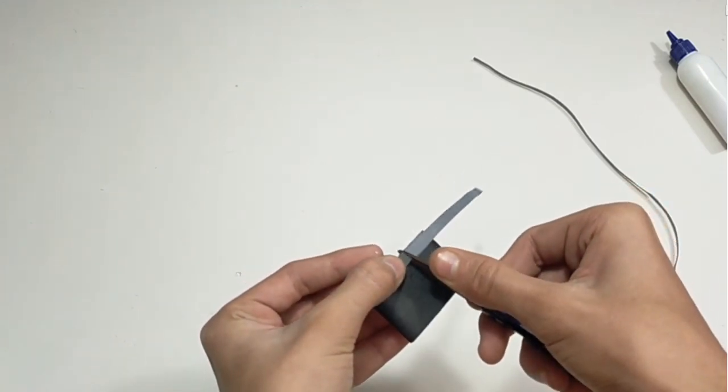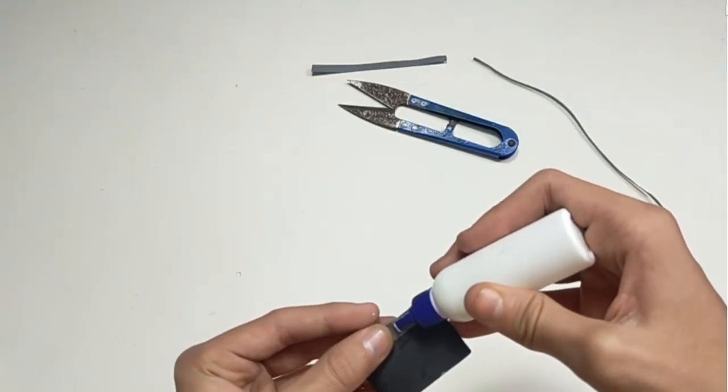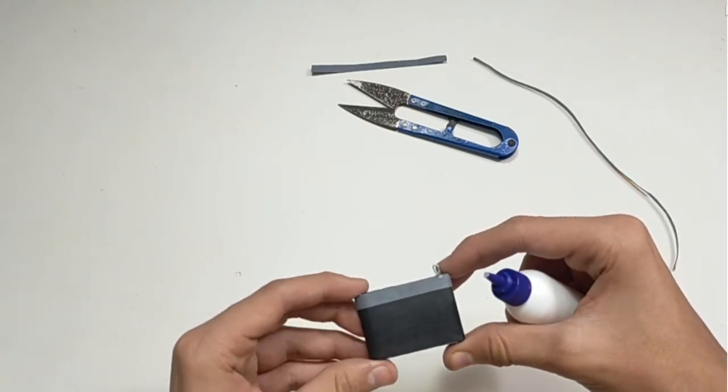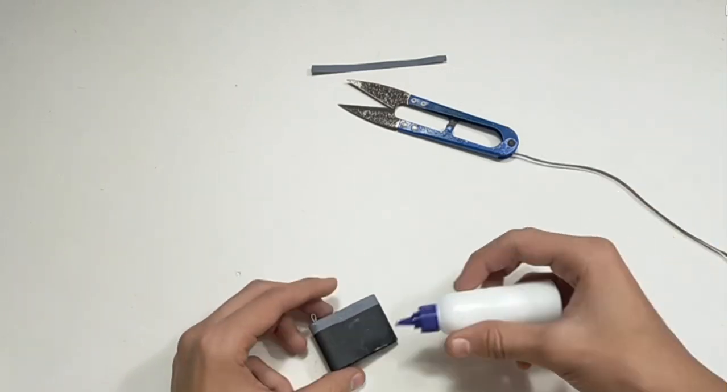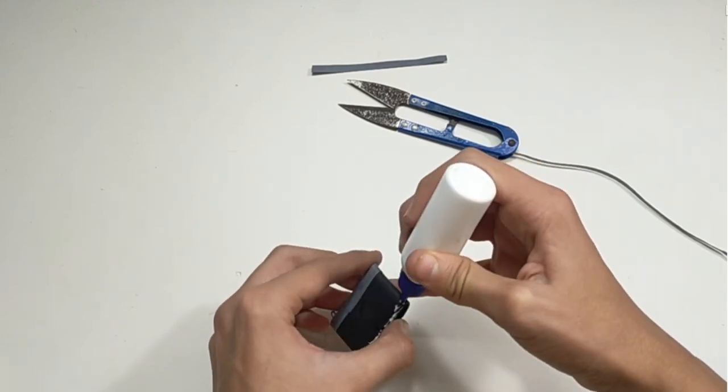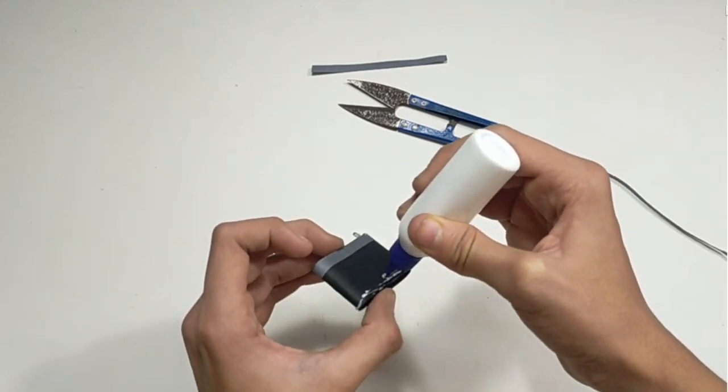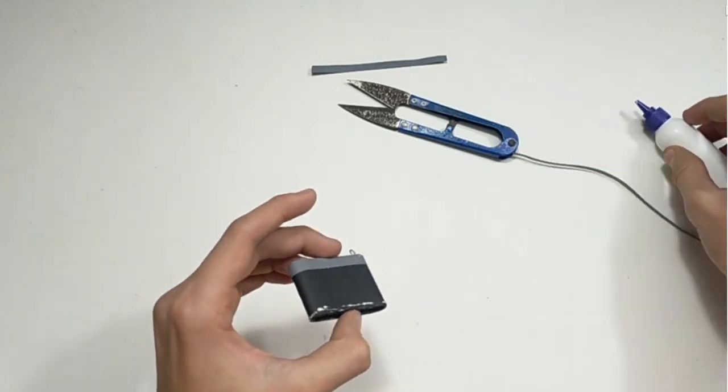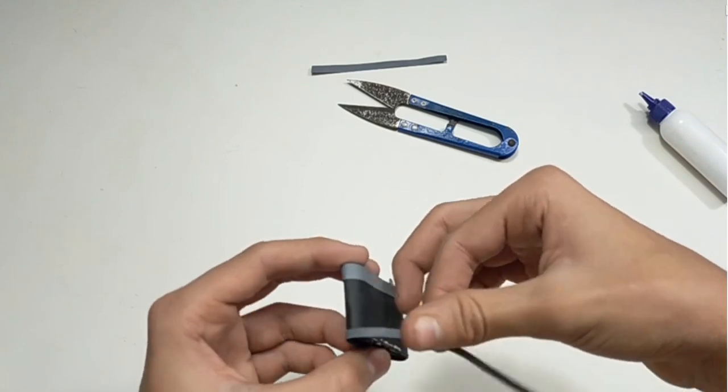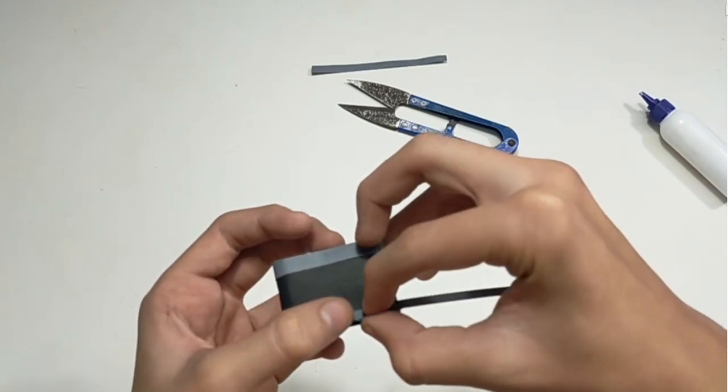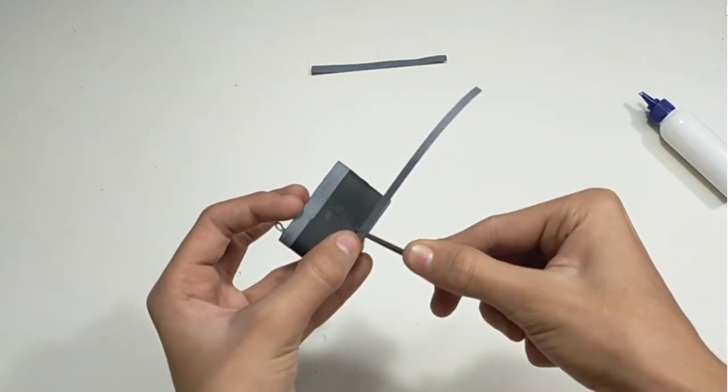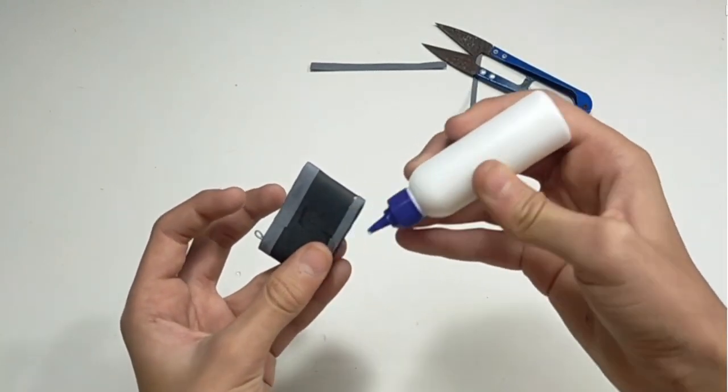Cut the extra part and secure the end. Now we will add the 3mm strip at the bottom. Cut the extra part and secure the end.